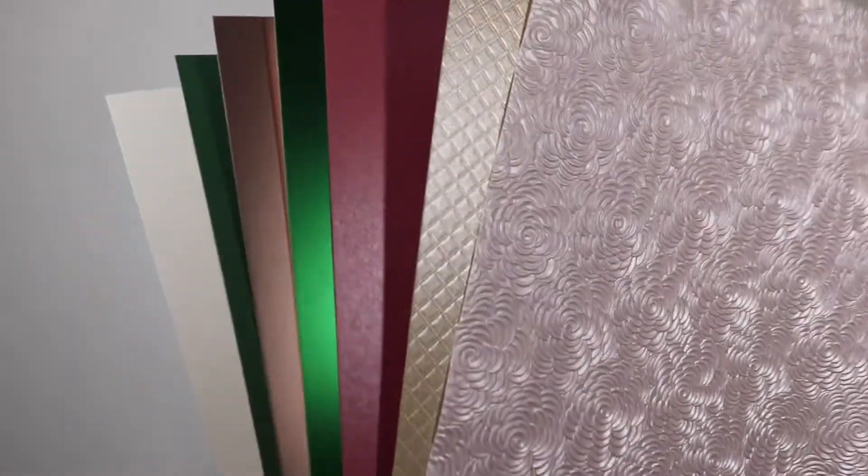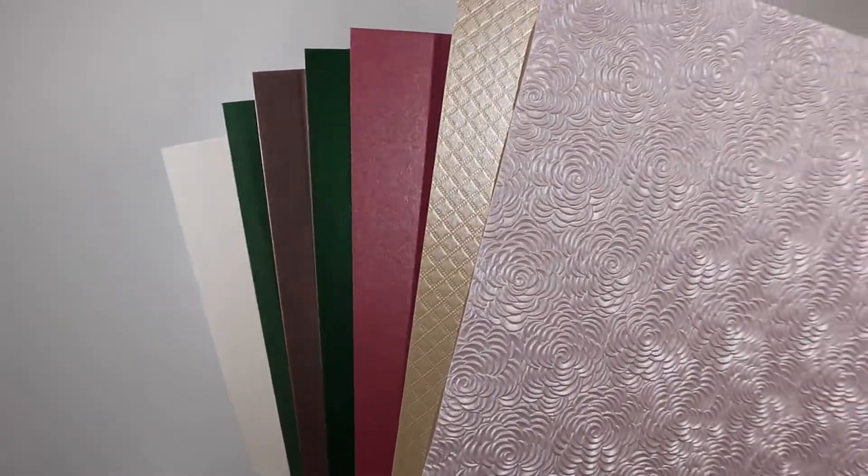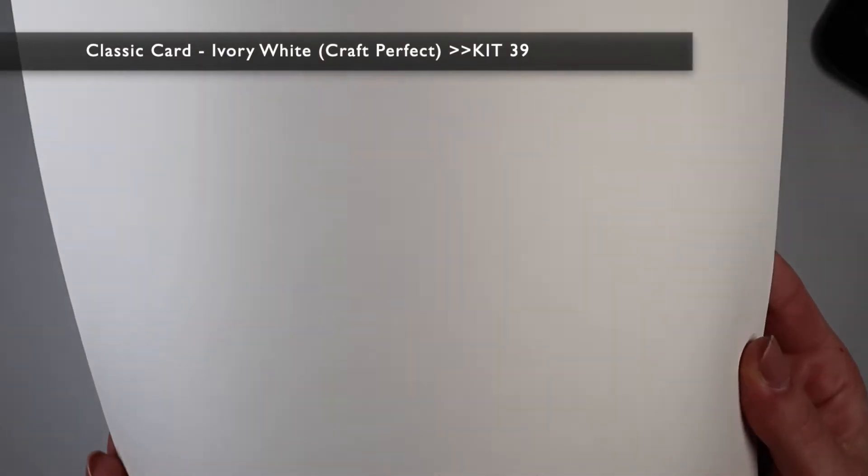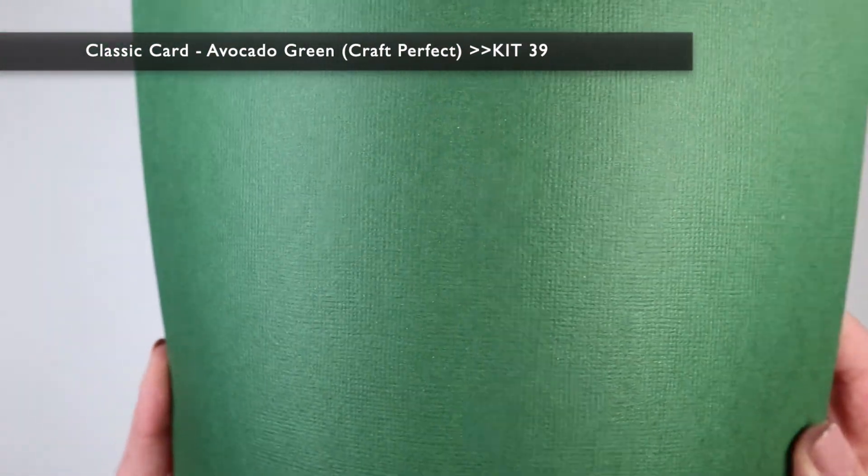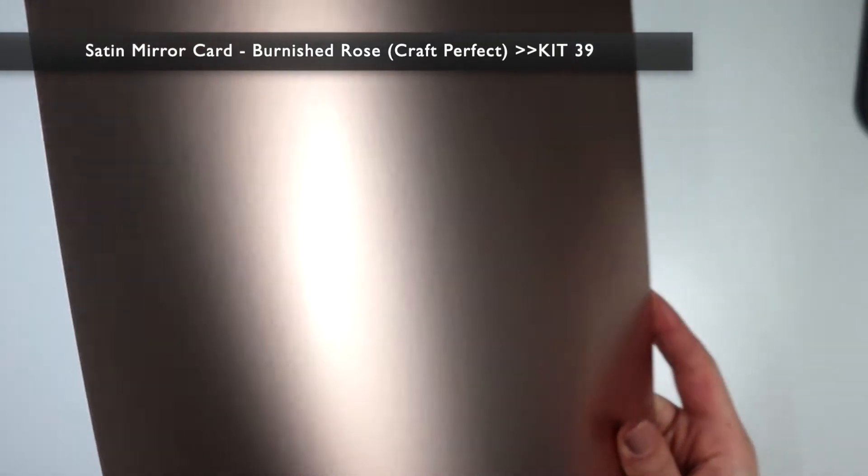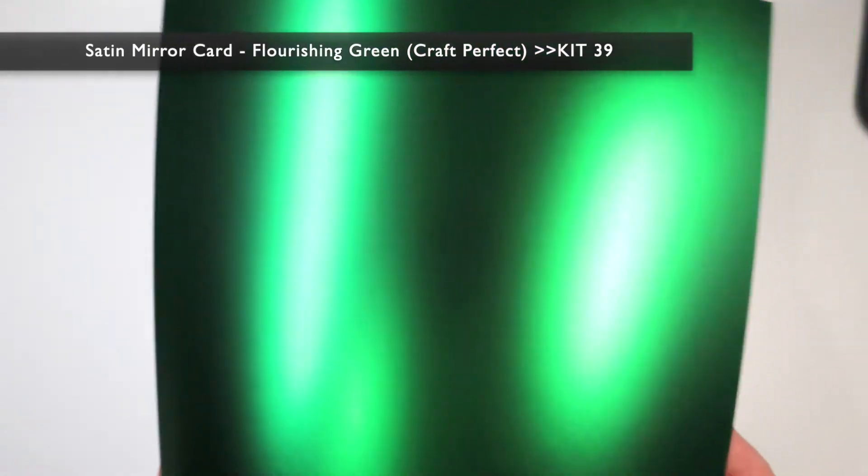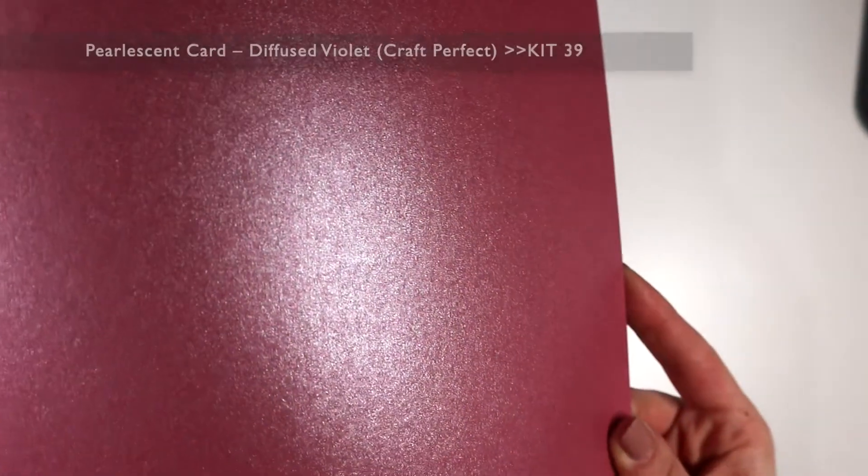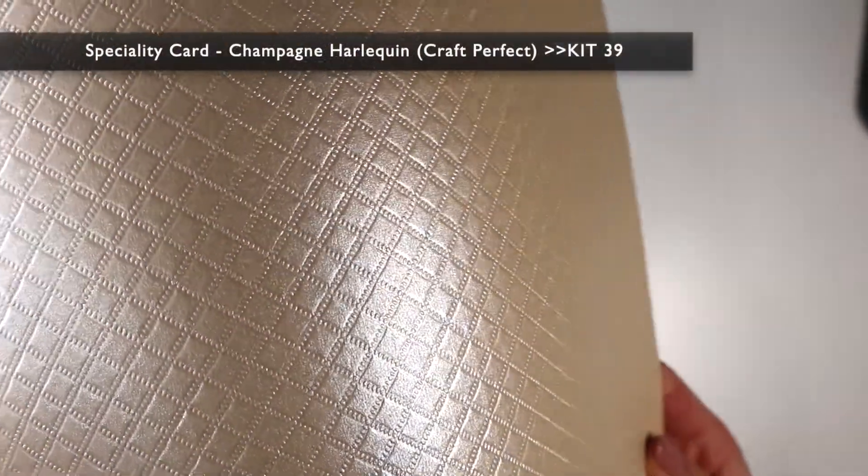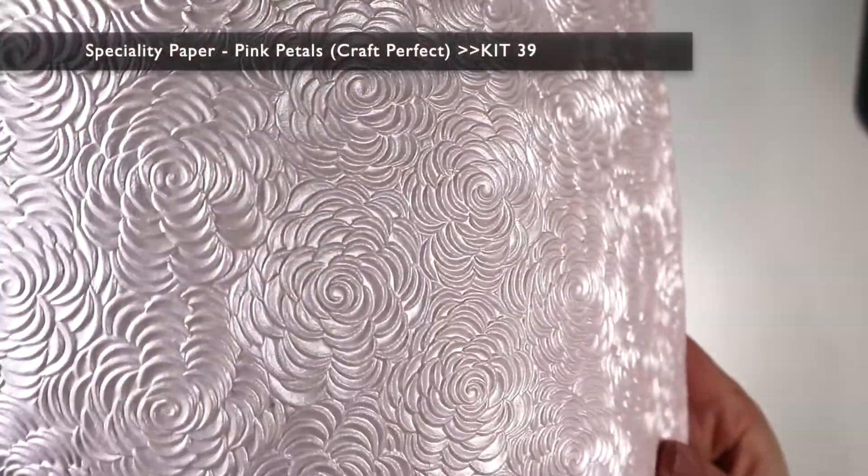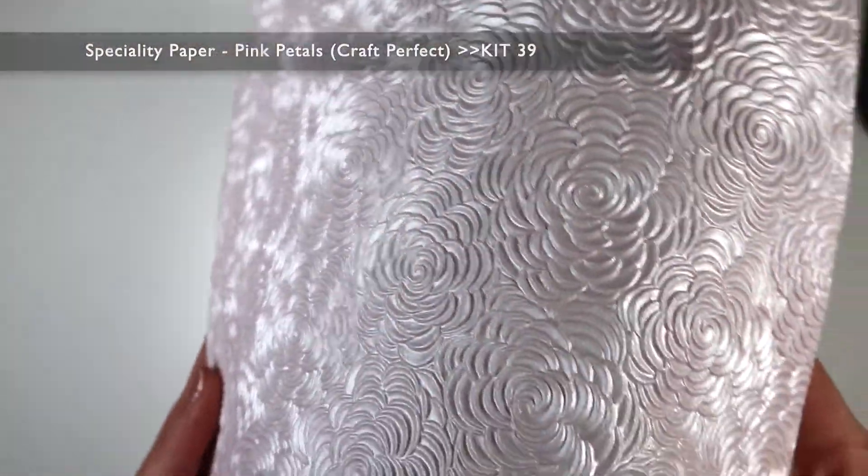Let's take a quick look at what you'll find inside the box, starting from the set of papers. We find an ivory classic card, an avocado green classic card, a pink satin mirror card, and a green one always with a satin finish. Then we find a pearlescent card in pink and a pearlescent ivory specialty card with this beautiful embossed texture.